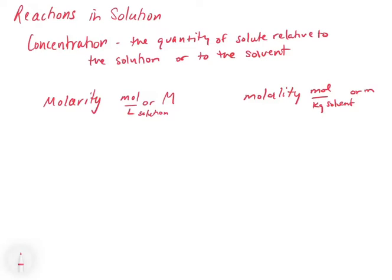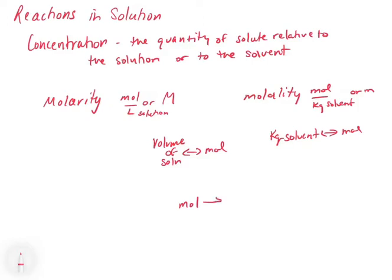The way we're going to use molarity — and primarily we're going to be doing this with molarity — is as a new unit conversion. Concentration allows us to go between the volume of the solution and the number of moles in the case of molarity, or between the kilograms of solvent and the number of moles in the case of molality. We have a couple of different ways of getting to the mole: by mass using molecular weight in grams per mole, or through the number of particles using Avogadro's number.